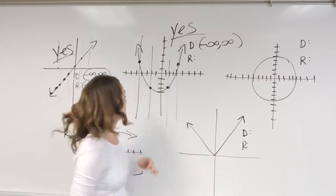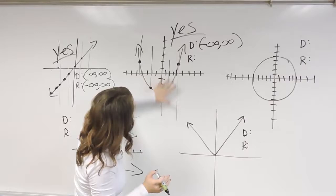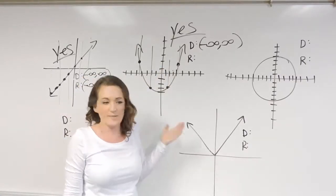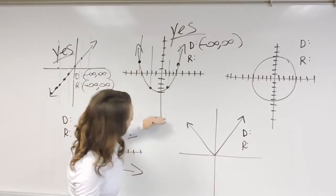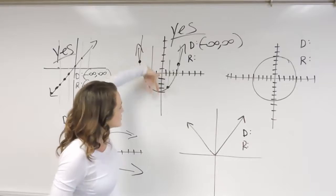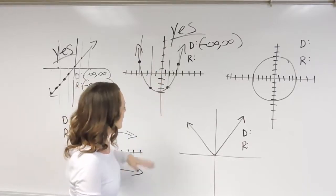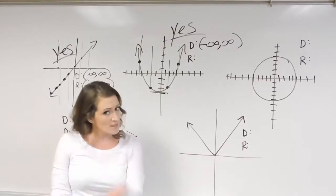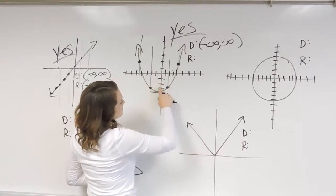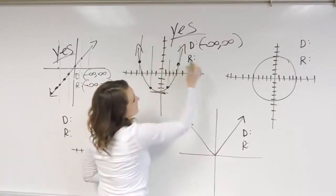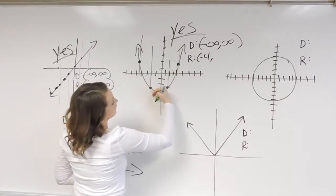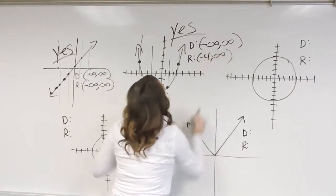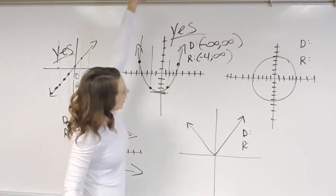When it comes to the range, we're looking up and down. I recommend always starting down and moving your way up. Down here I don't have a graph — this graph is never going to turn around and go down in this direction. So I don't have a graph until we hit this point here, which is at negative four. My range values don't start until negative four, and they go up and up to positive infinity. So the range is negative four all the way up to infinity.